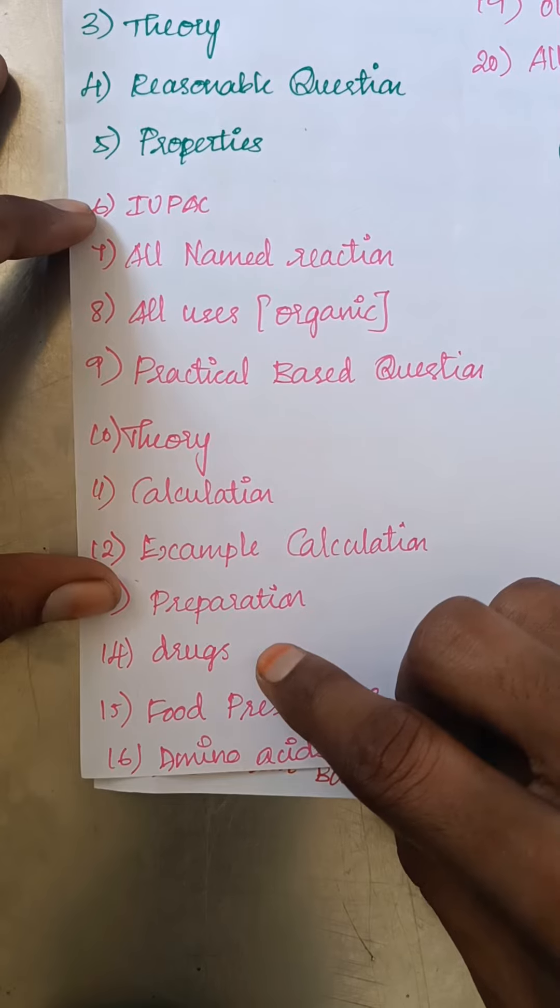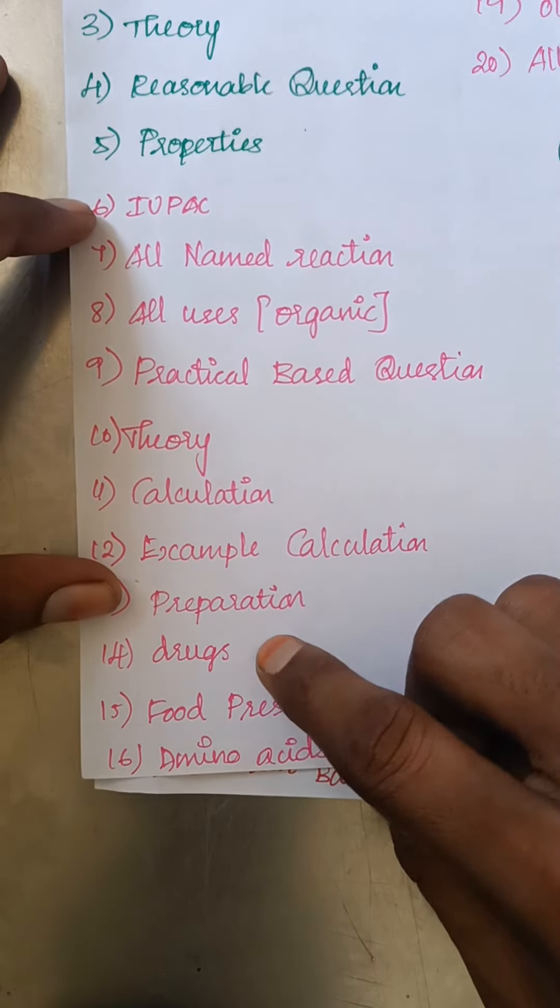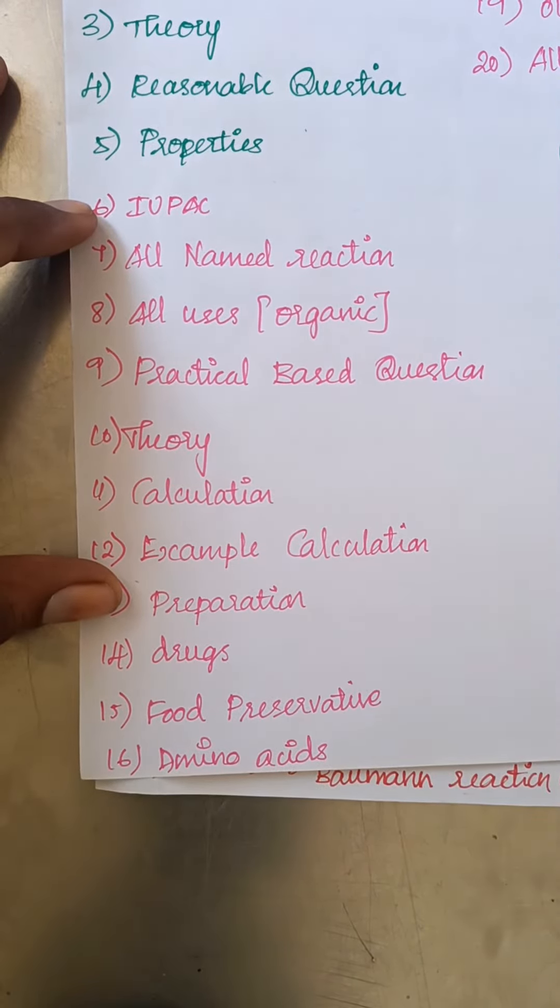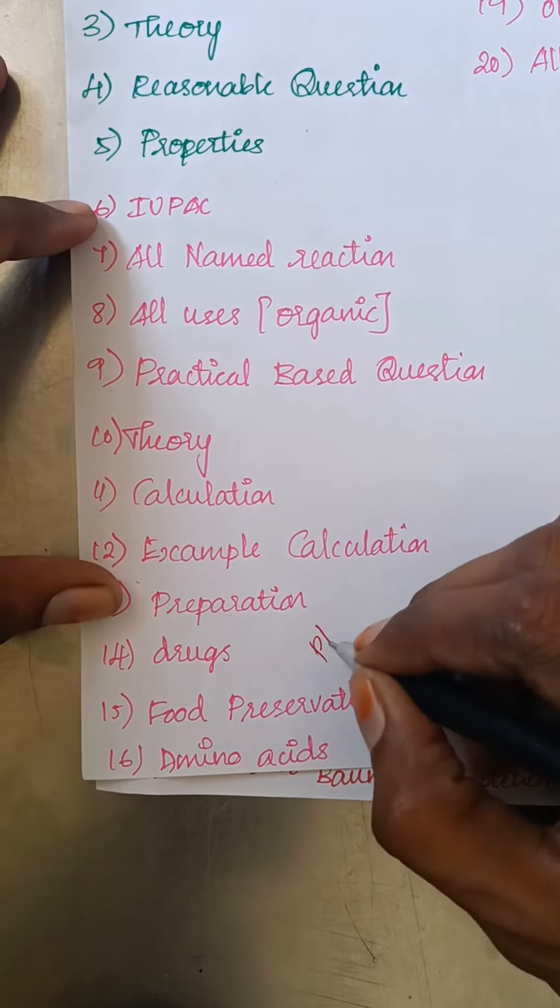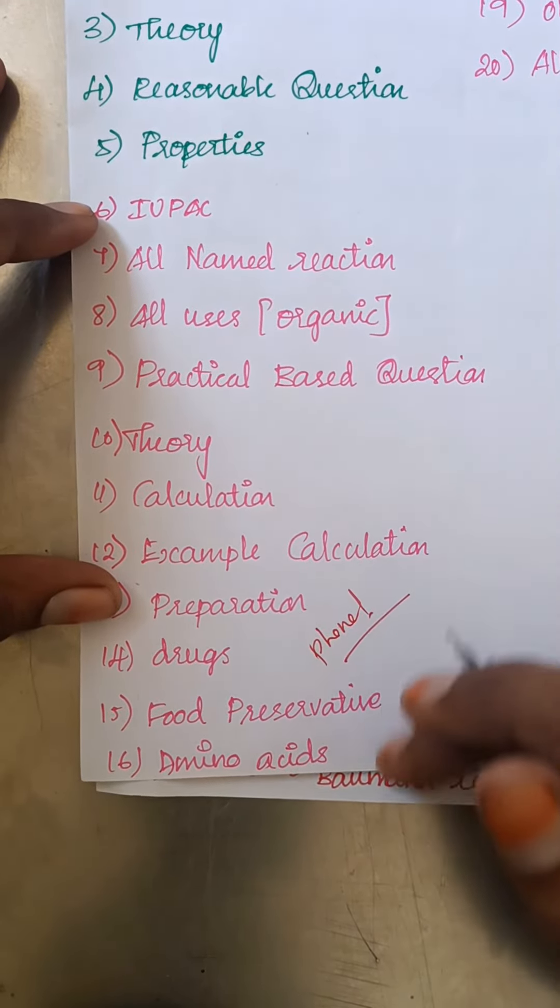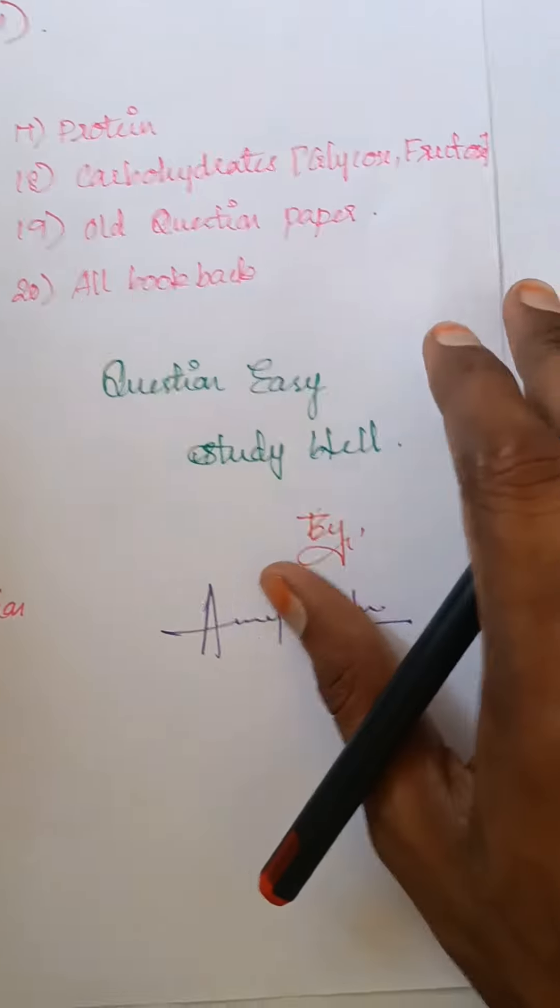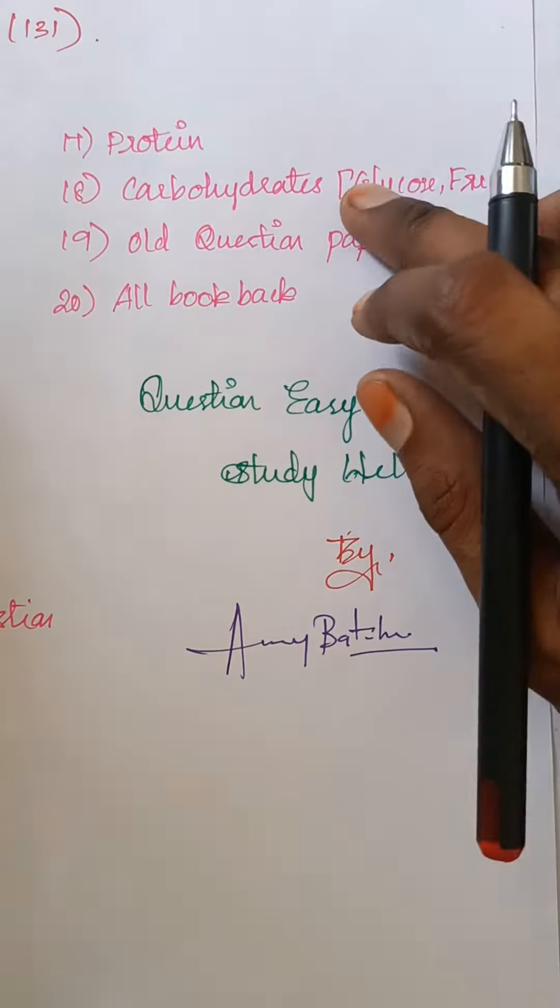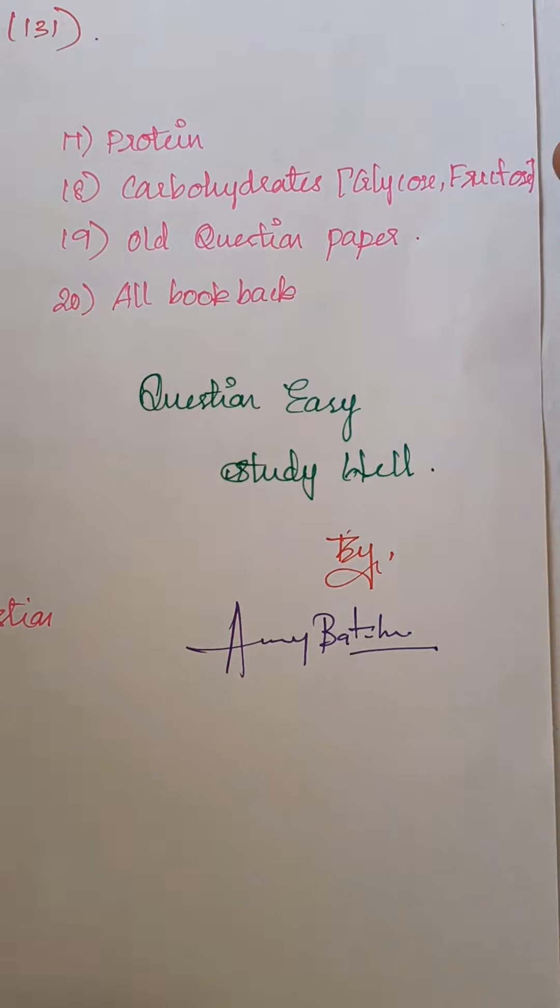What is the important topic? We have to talk about drugs. What is the important topic? We have to talk about phenol chemistry. Next, food preservative, amino acids. This is a type. The last one is proteins, carbohydrate, old question paper.